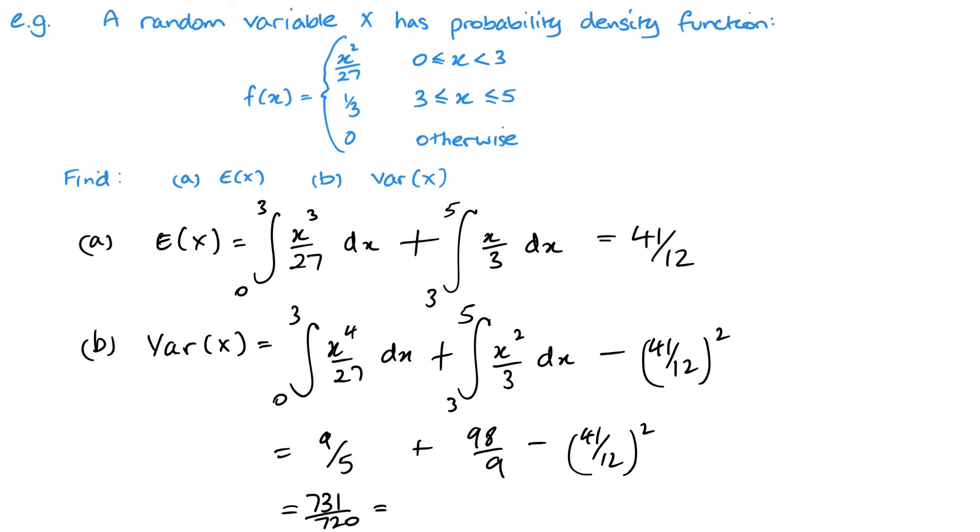That should leave me with a final value of 731 over 720, or if I was doing it to three significant figures, 1.02 to three significant figures. So hopefully, obviously I've skipped a few steps there because I don't think you need to see me integrate again. But all you need to remember with a piecewise is integrate each one separately and add them together with the variance. Don't forget to subtract the mean squared.